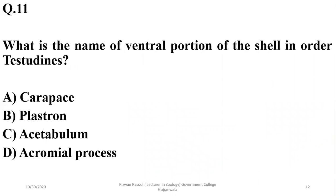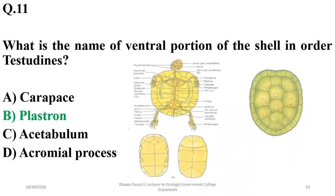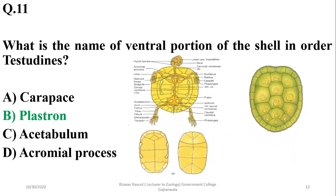Question eleven: what is the name of the ventral portion of the shell in order Testudines or turtles? The correct option is plastron. The ventral portion of the shell is named plastron, and the dorsal external part is the carapace.